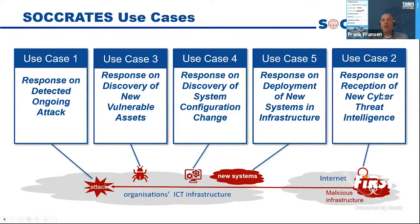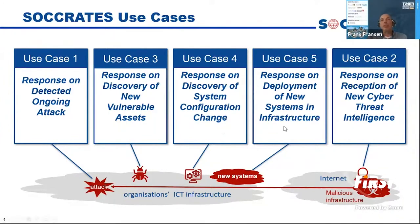The second use case is for new threat intel — when we learn of a new type of attack or a new way that a particular APT group is doing their attacks, we can assess that in the context of our infrastructure and determine if we have to take particular measures to be better protected. The third use case is when we discover a vulnerability in our assets — we run a vulnerability scanner and some assets show new vulnerabilities. We assess what that means for that host, but also what it means for other assets, and if those assets are compromised more easily due to a bug in some other system. Use case four is system configuration and use case five is new systems being added. Each of these are events that we automatically want to assess for the exposure of critical assets in our infrastructure.